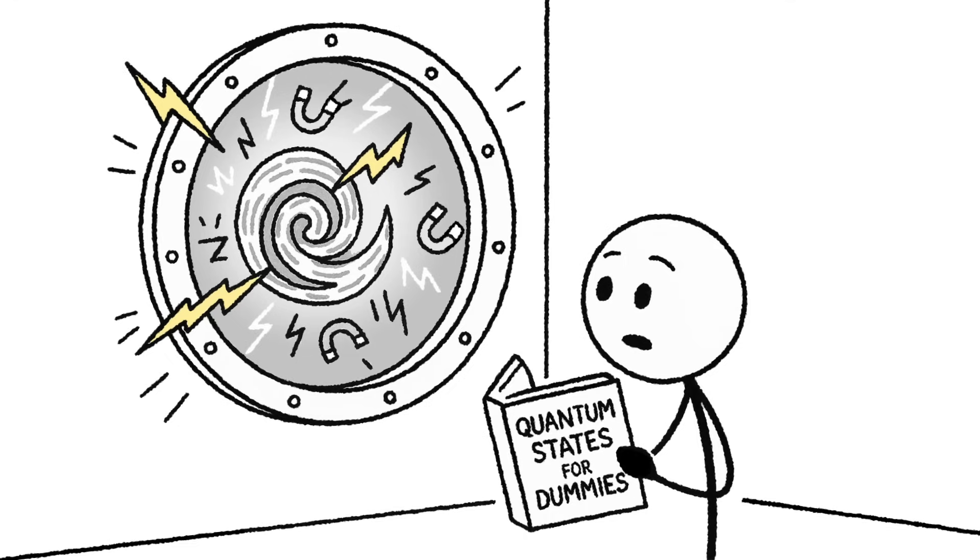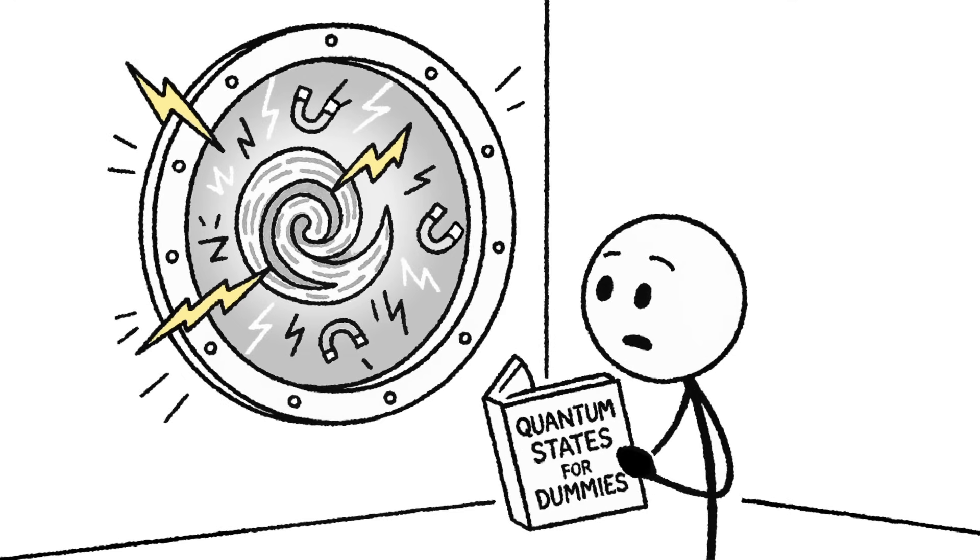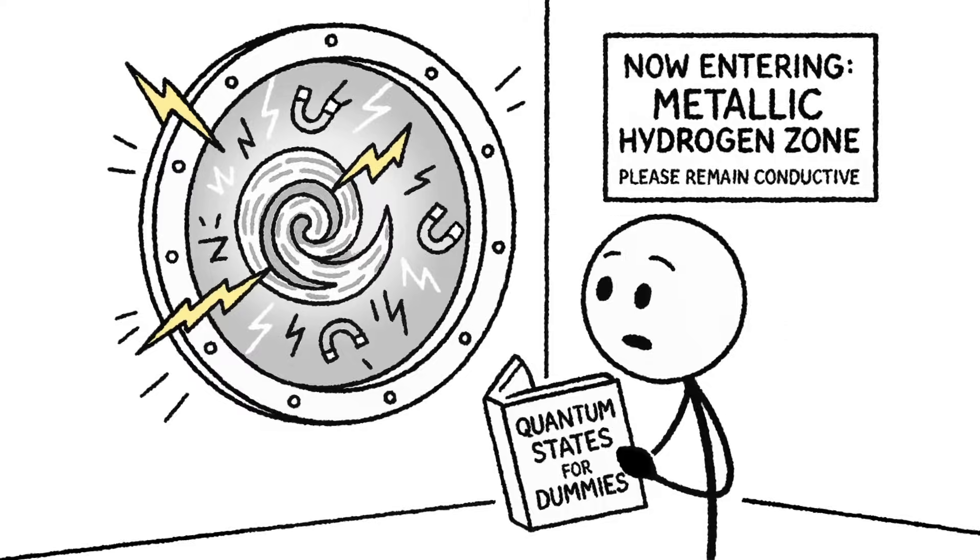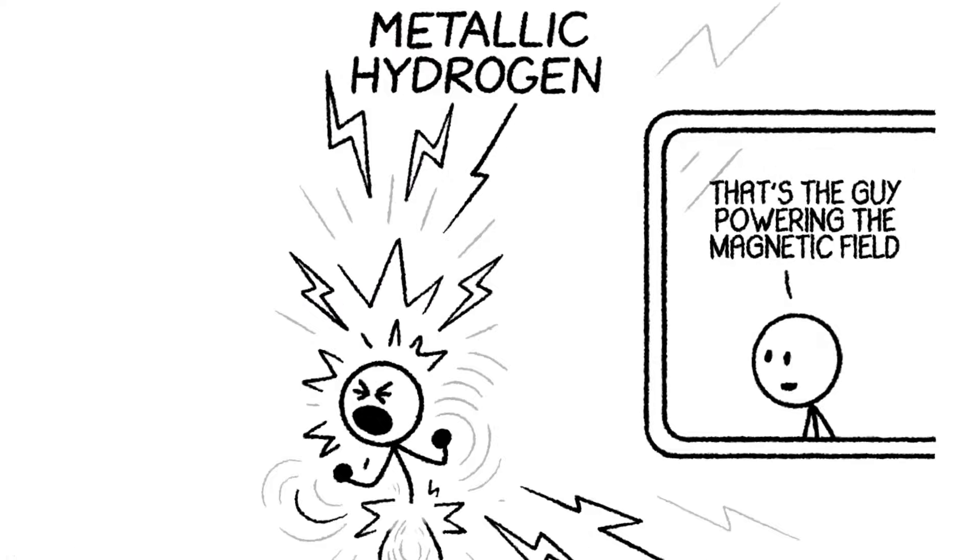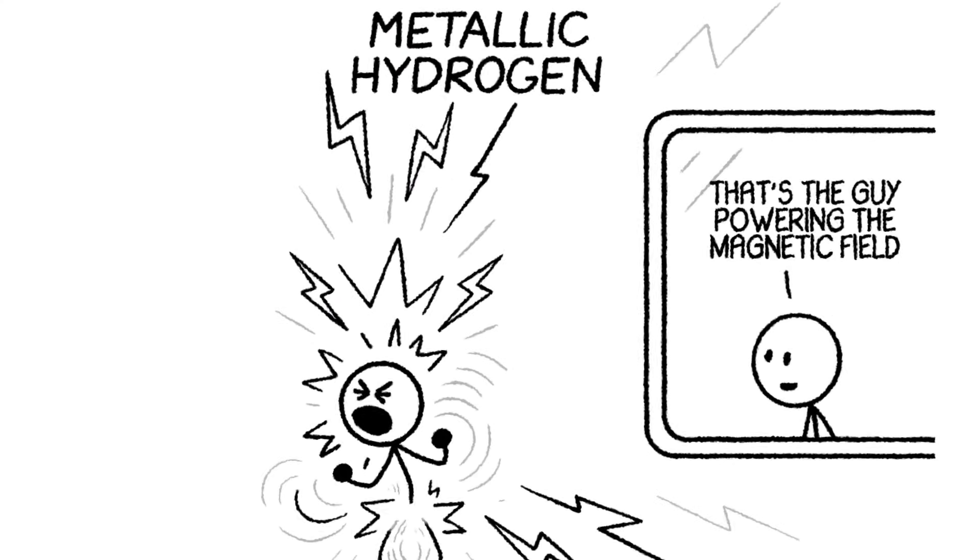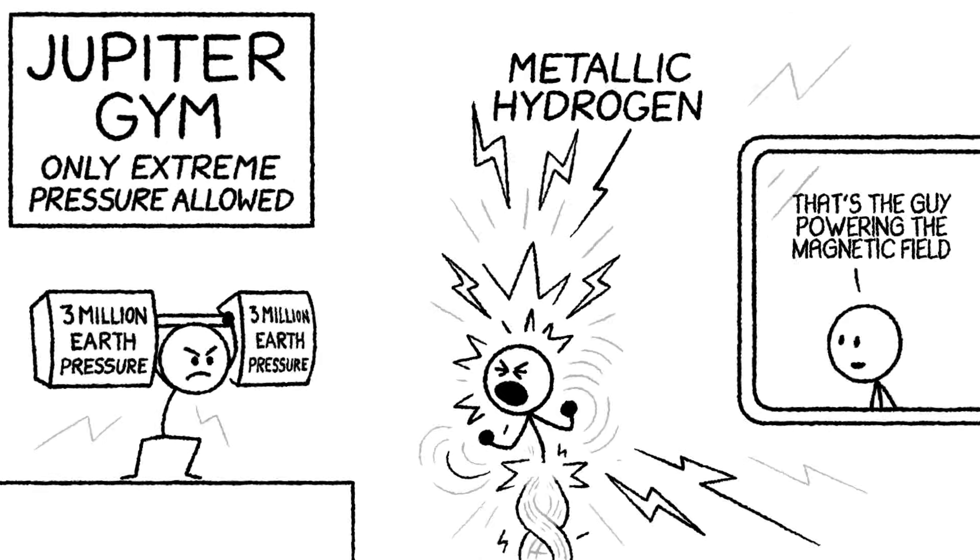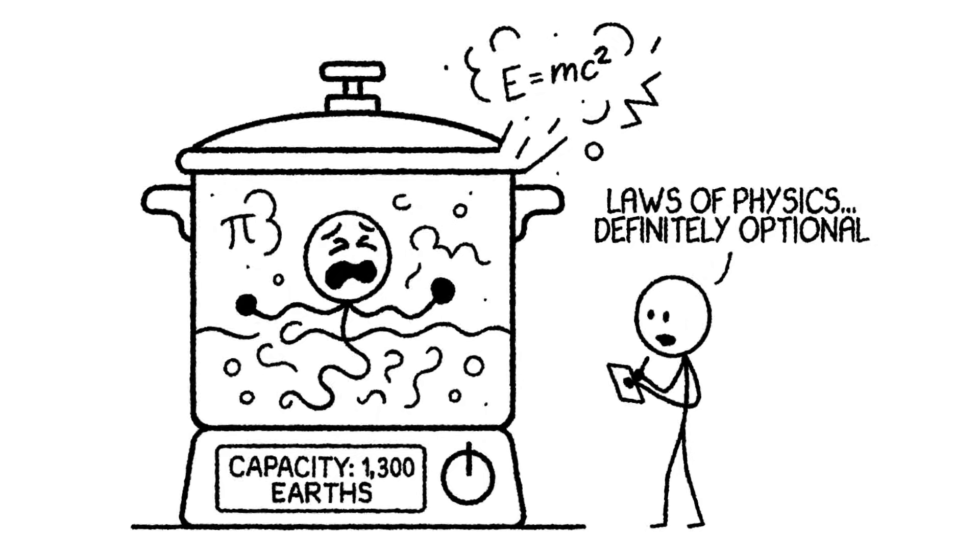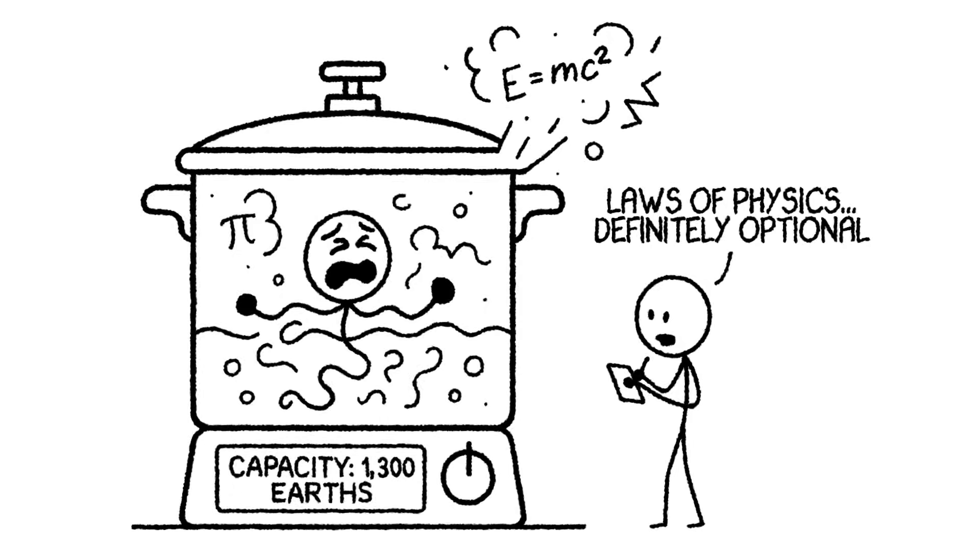And then the hydrogen starts to change. It transitions into metallic hydrogen, an exotic, electrically conductive phase theorized to act like a liquid metal. Scientists believe it's responsible for Jupiter's insane magnetic field, and it only forms under pressures of over 3 million times Earth's atmosphere. Jeff is now deep inside a planetary pressure cooker the size of 1,300 Earths. The deeper he goes, the more the laws of nature bend him into an unrecognizable soup.